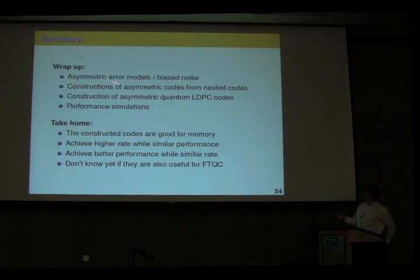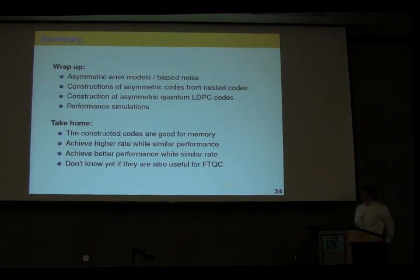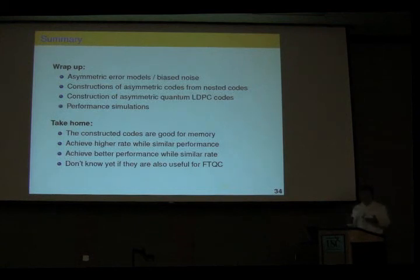To wrap up: I hope I motivated the model of asymmetric biased noise and gave some constructions of asymmetric codes. As a take-home message, these codes are currently only known to be good for memory — we don't know if you can operate on them. What I'd really like to know is whether something like a universal gate set is possible for this kind of model, but honestly I don't know at this point.